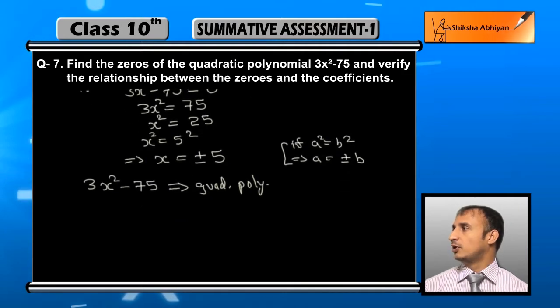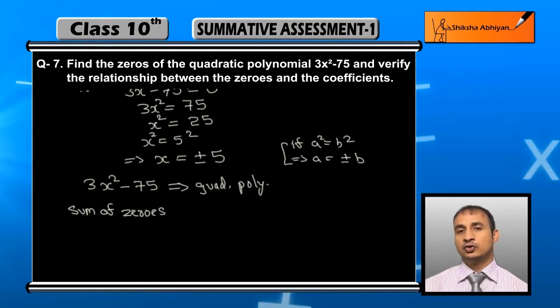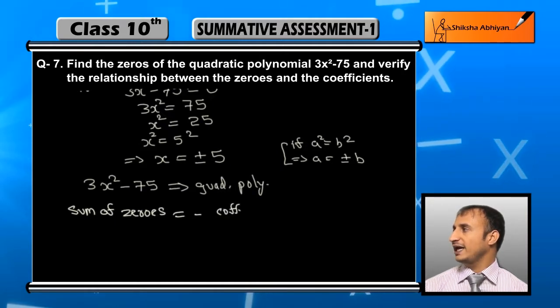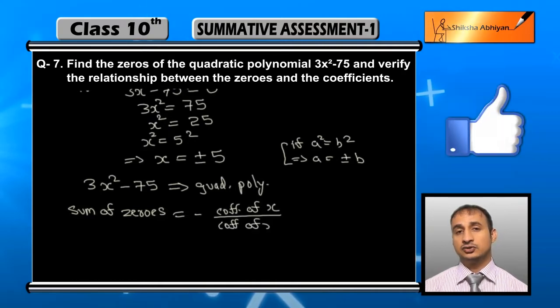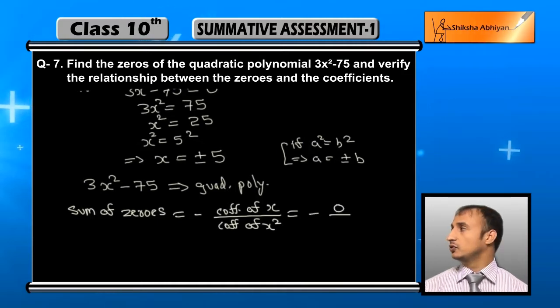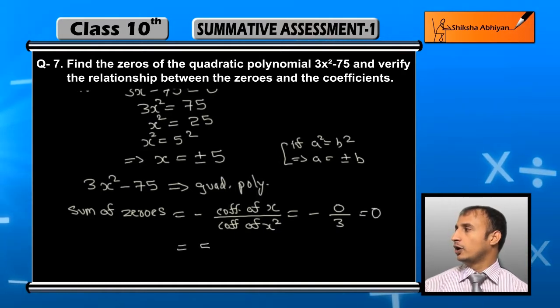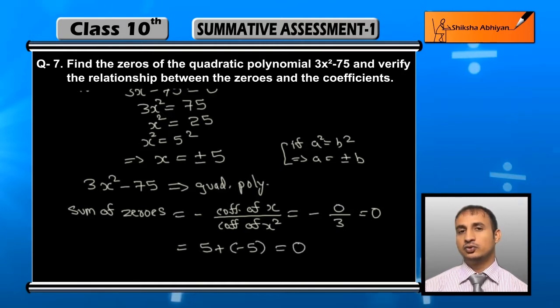Now for verification: sum of zeros equals minus coefficient of x upon coefficient of x². Here you can see the coefficient of x is 0 and coefficient of x² is 3. So this is minus 0 by 3 equals 0. The sum of plus 5 and minus 5 is also 0, so this is verified.